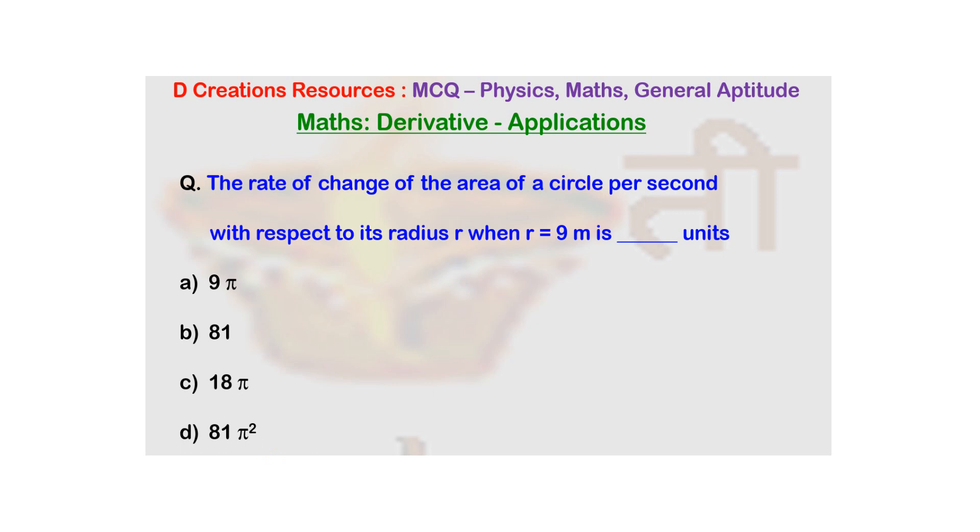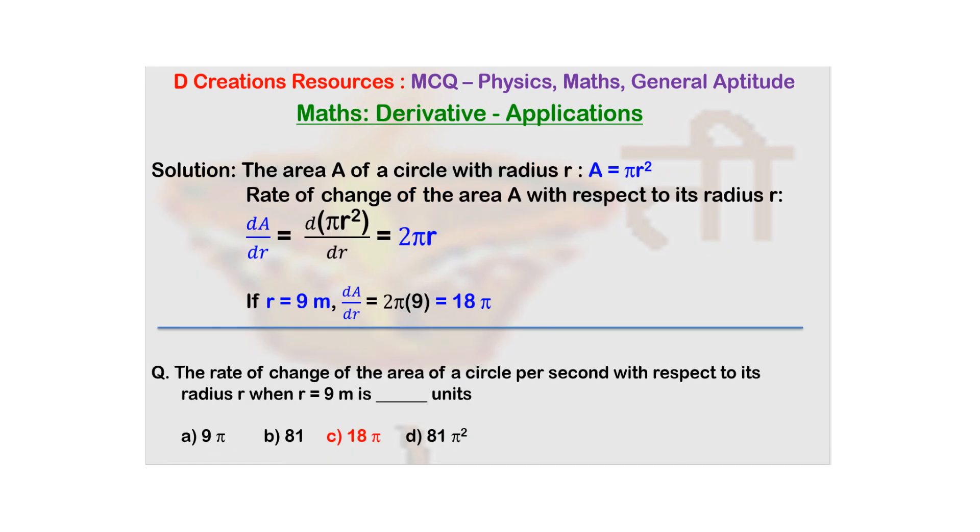Area of a circle with radius r is A = πr². So if you are thinking of rate of change of this area with respect to radius, then you will have to take its derivative.